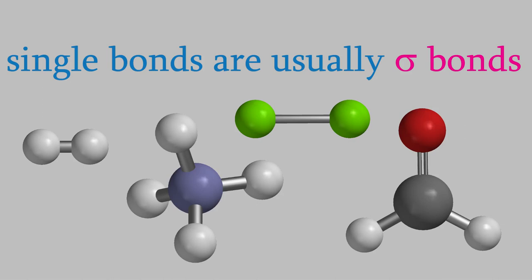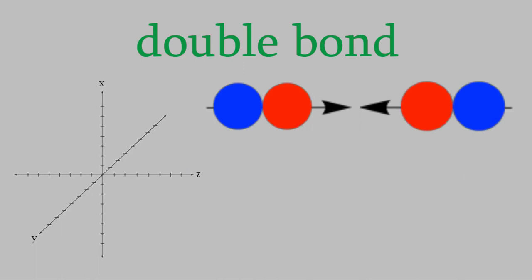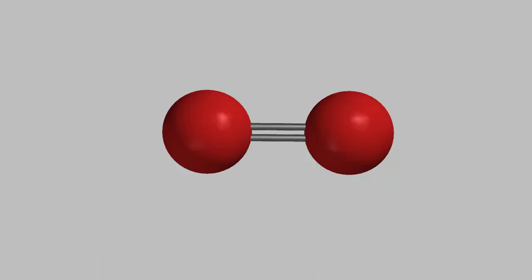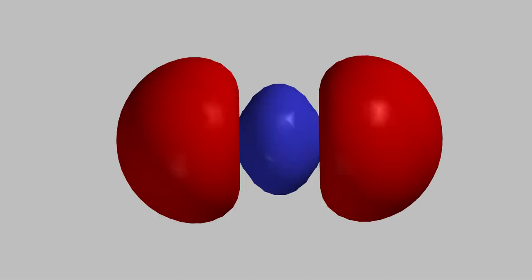But what about double bonds? Well, a double bond consists of two bonds. One of them is still a sigma bond, usually made from two p orbitals along the z-axis. But the second bond is made from two p orbitals oriented along a different axis, either the x or the y. For example, here are two oxygen atoms, double bonded together. One of the two bonds is a sigma bond, made from the two p orbitals along the z-axis.